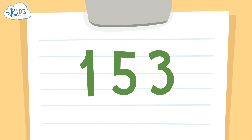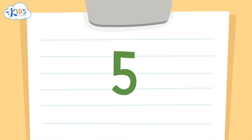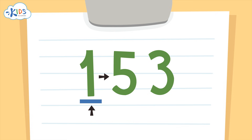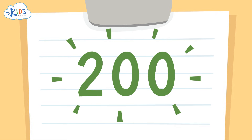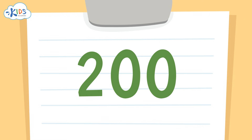The same rule applies when rounding to the hundreds place as it does when we round to the tens. Five is the key number. If it's five or higher, you round up. Four or lower, you round down. You round the number in the hundreds place and make the numbers in the ones and the tens places zeros.